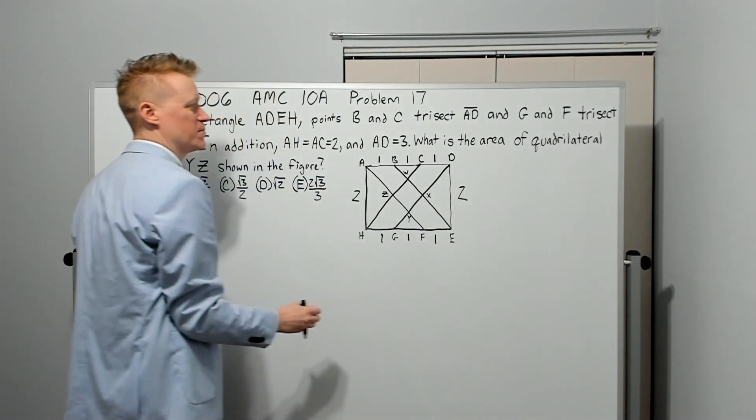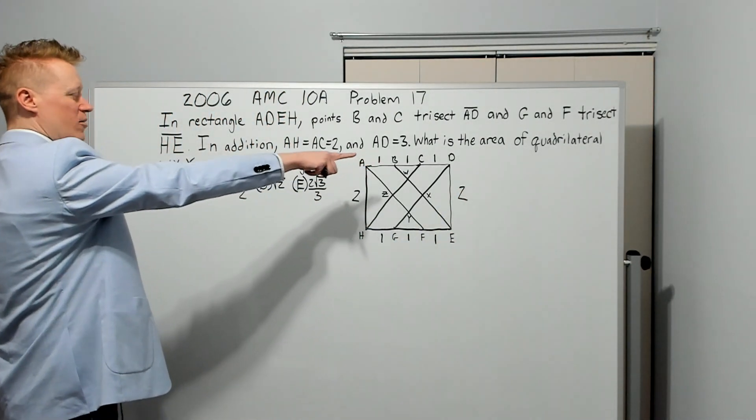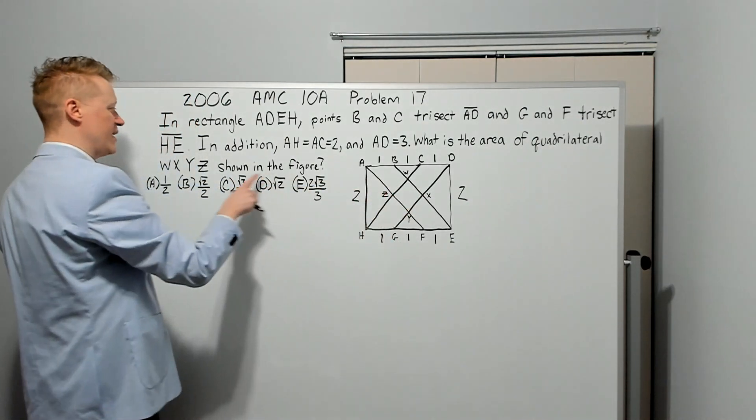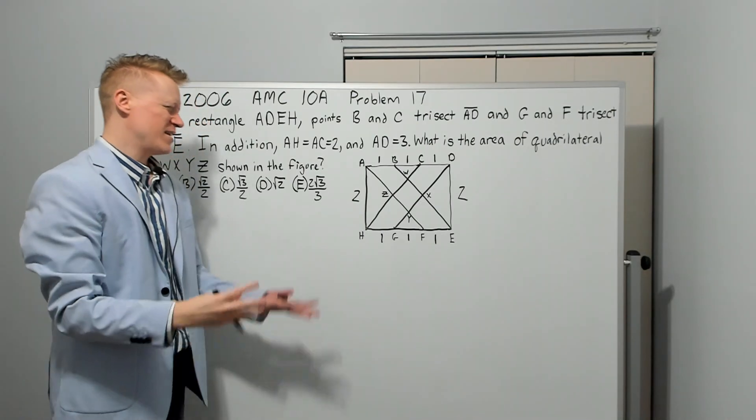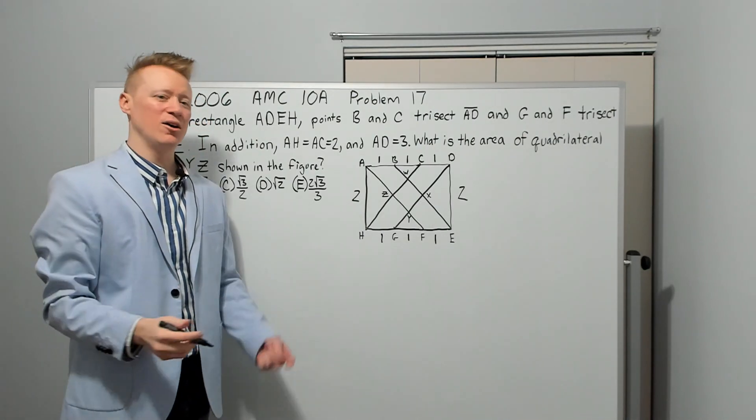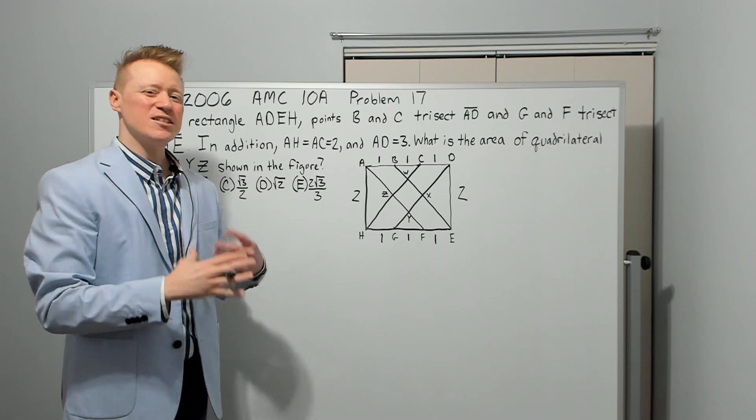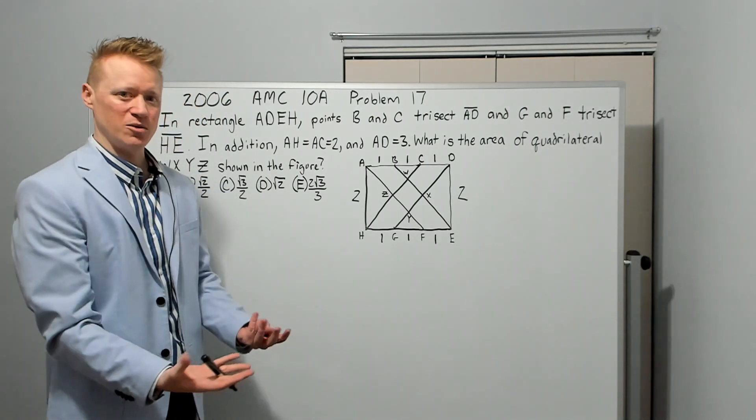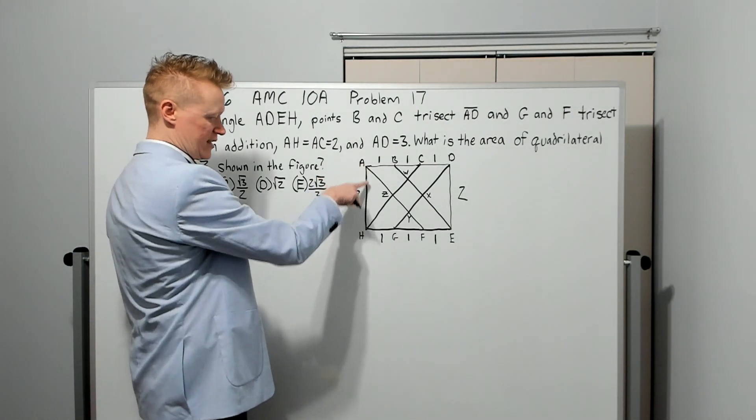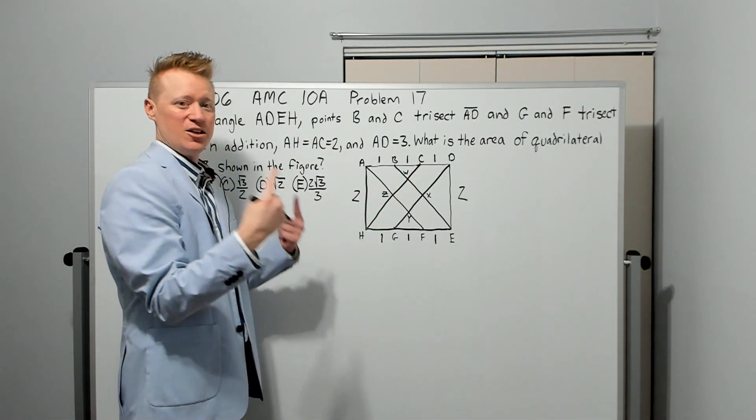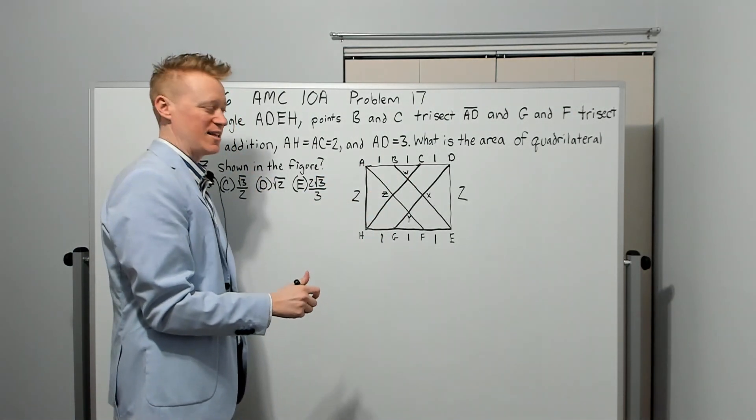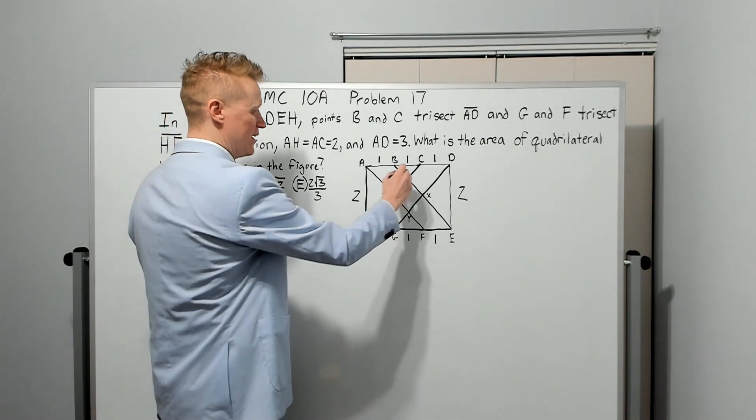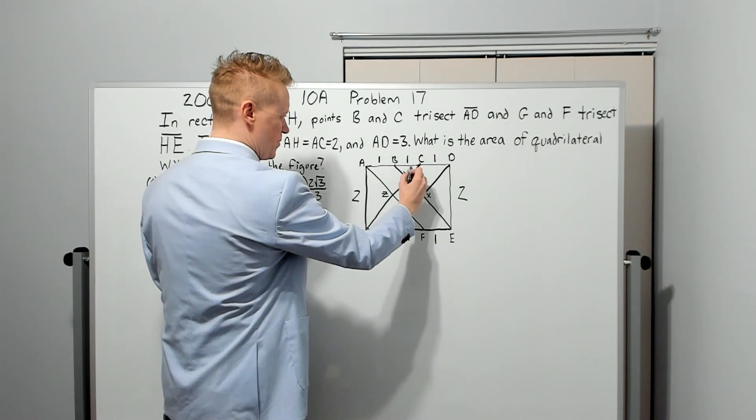What is the area of quadrilateral WXYZ shown in the figure? It's a messy geo calculation. You need to start finding pieces of information. When they told us AH equals AC, your brain should have said isosceles right triangle, better yet, 45-45-90. Meaning this must be 45, this must be 45, and that's 90.